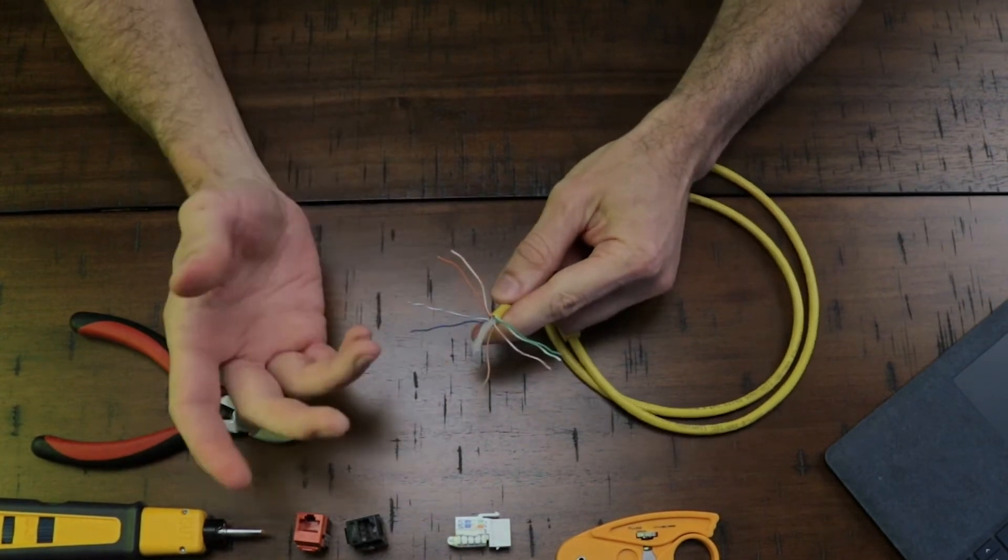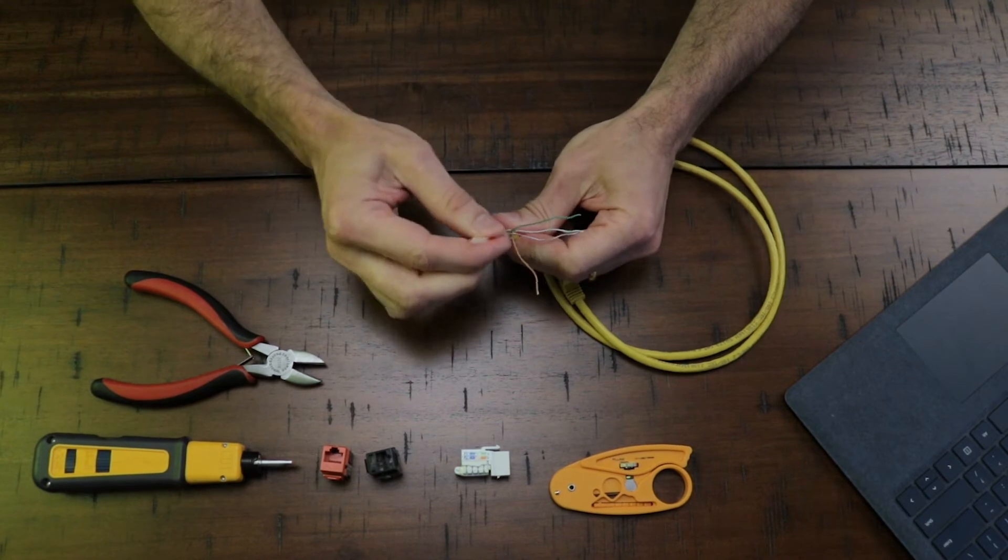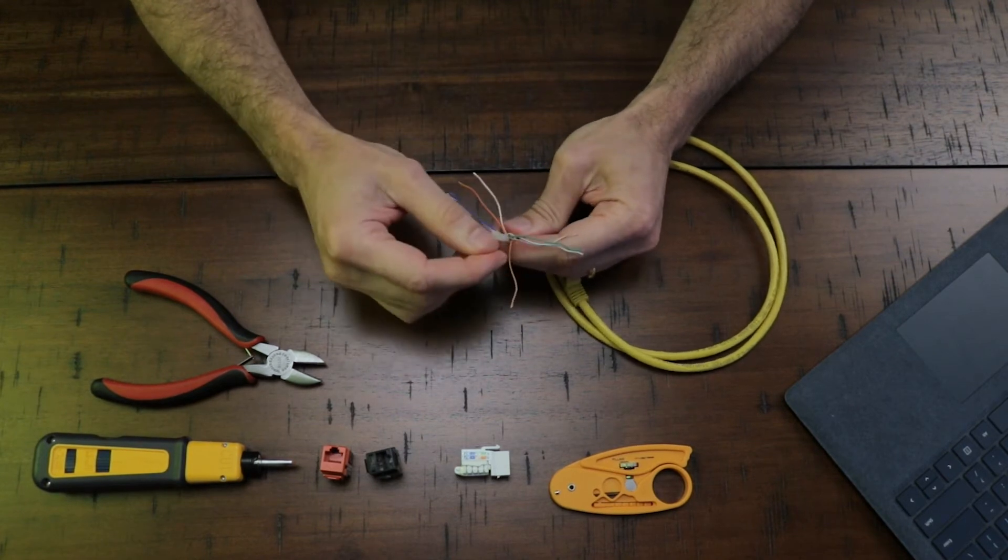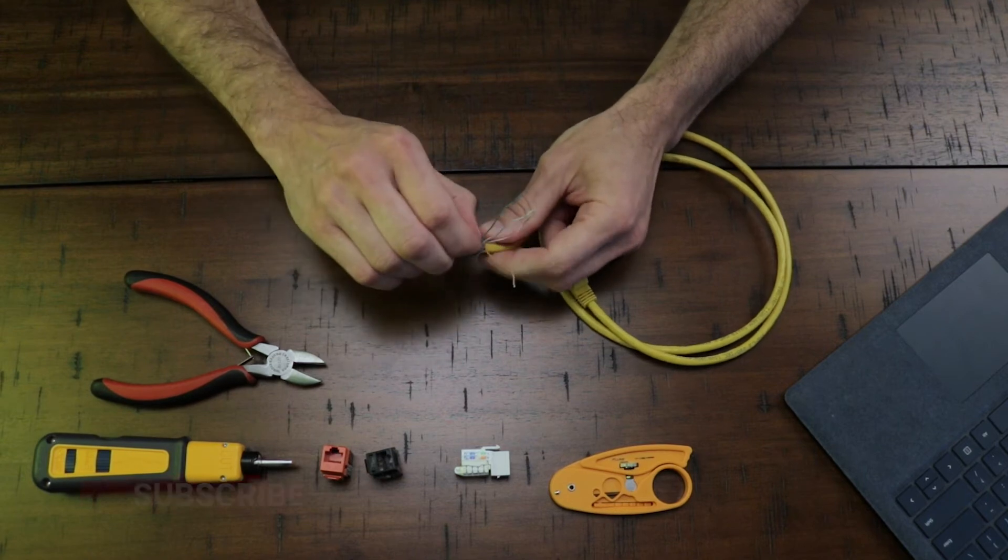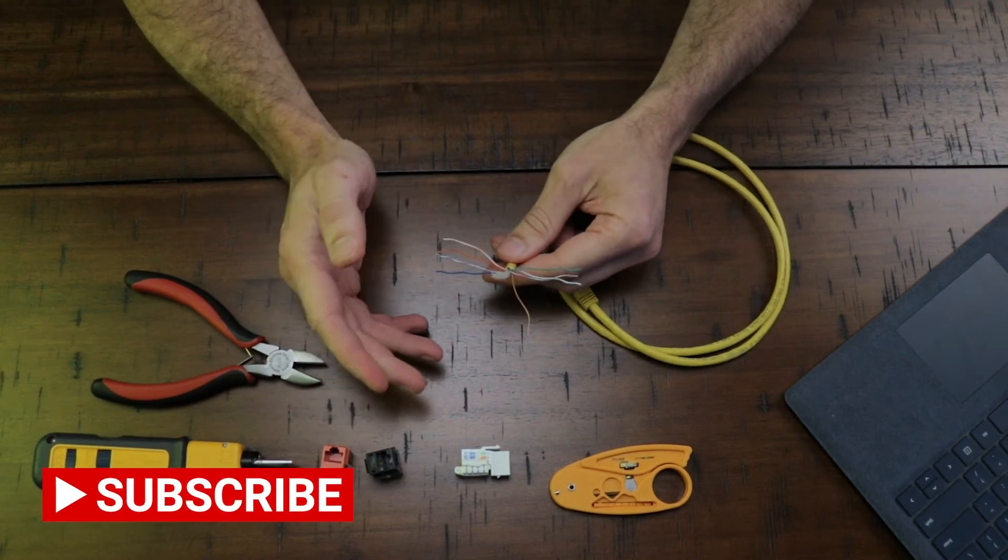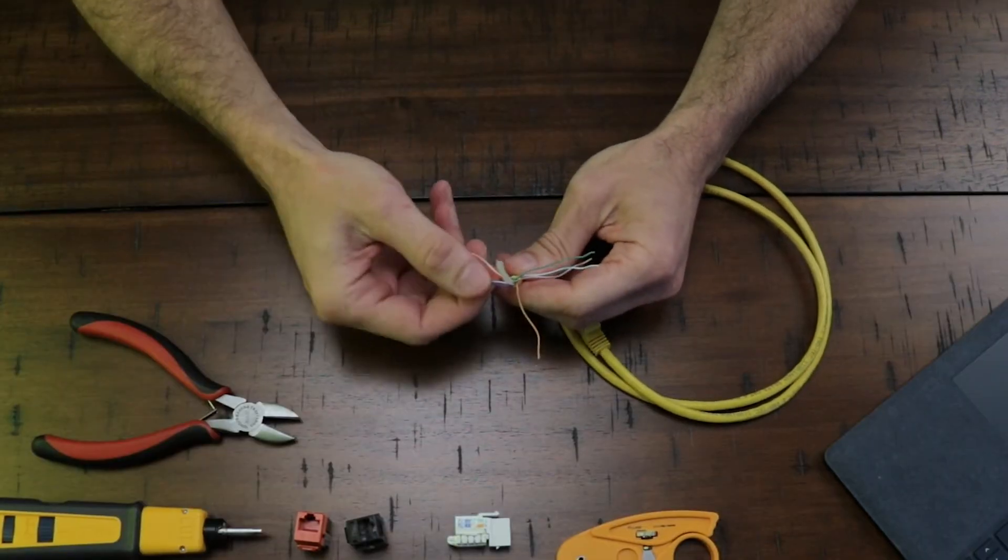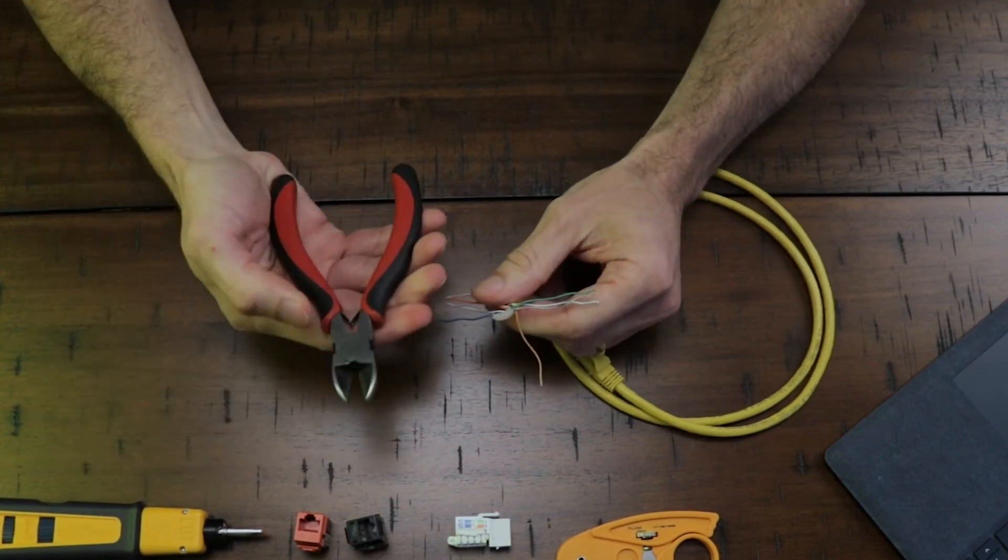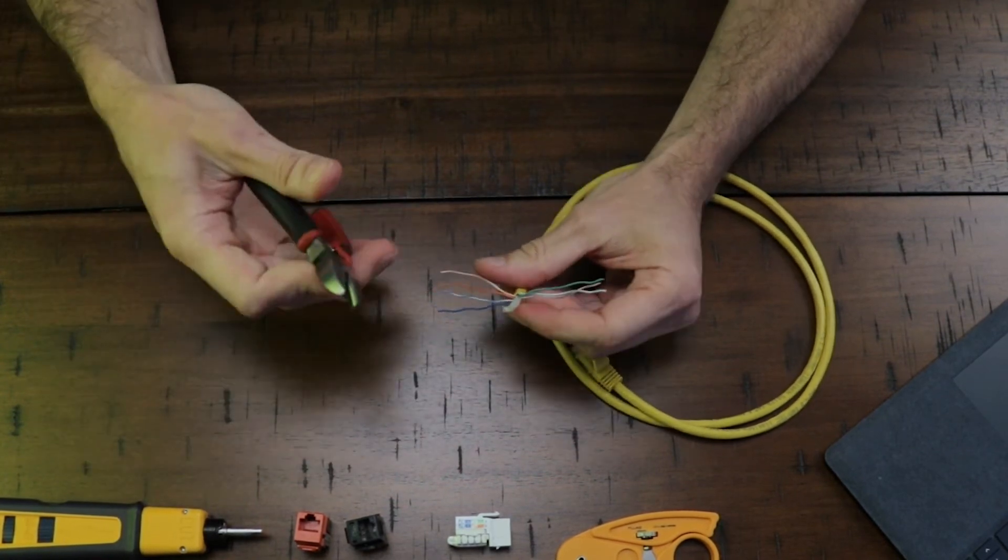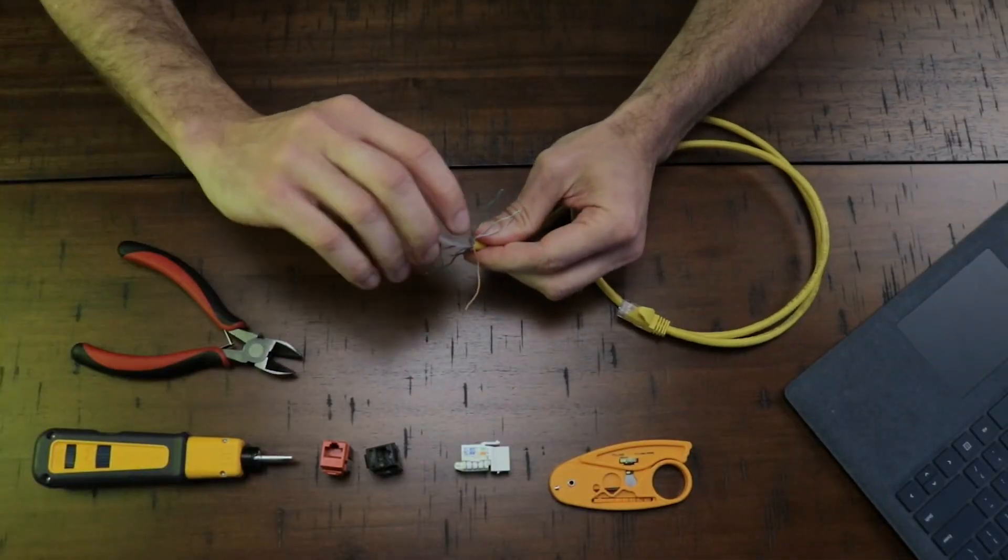It's called a spline. The best way to remove it is not using a knife or scissors or anything like that, because you can damage the wires on the inside of the ethernet cable. Just use a wire cutter and cut each wing and twist it. Done.